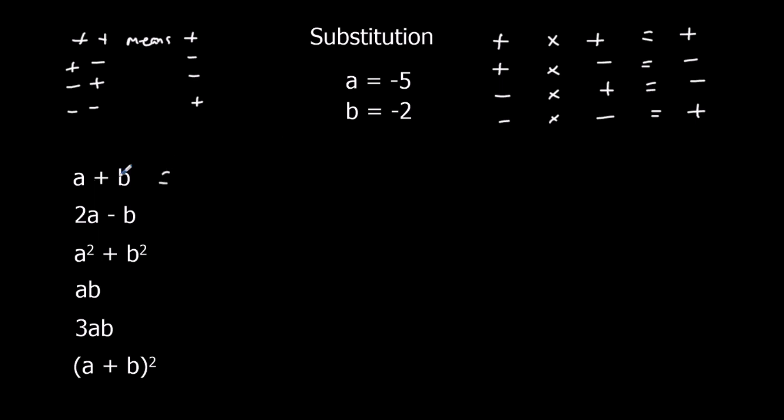So let's start substituting. A becomes minus 5, B becomes minus 2. So we've got minus 5 plus minus 2. Plus minus just means minus. So it's minus 5 minus 2. Minus 5 down another 2, and that's minus 7.